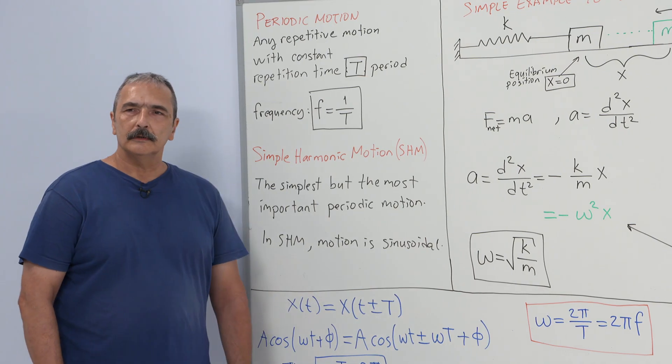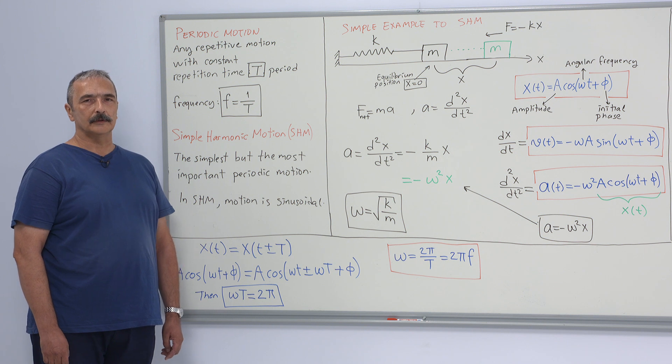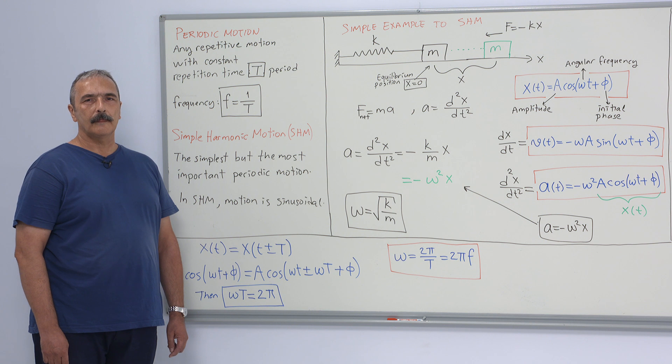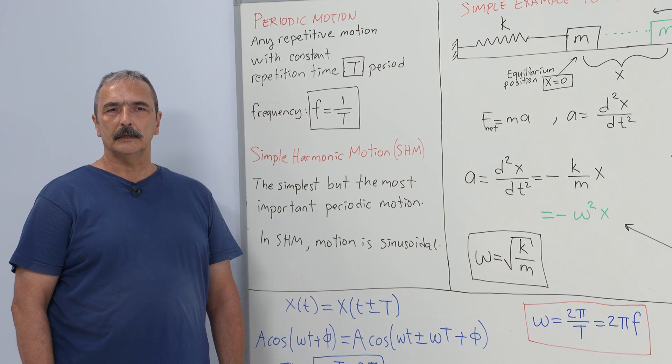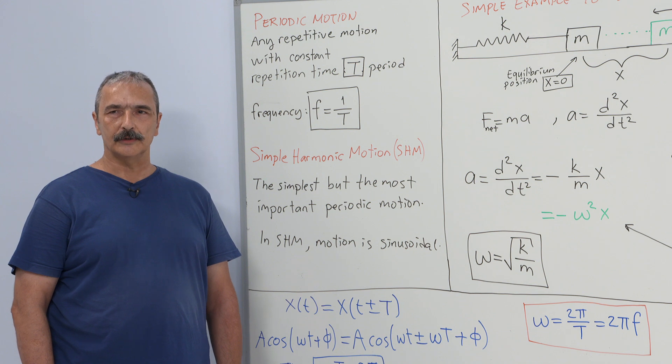Simple harmonic motion is one of the simplest but most important periodic motion. In simple harmonic motion, motion is sinusoidal. Its importance is due to that any periodic motion can be expressed as the sum of simple harmonic motions.